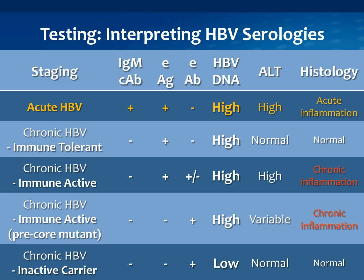Someone with chronic hep B who is immune tolerant has a positive E antigen and high viral load, but the body has not recognized the virus — there's no inflammation and ALT is normal. These people are still quite contagious due to high circulating virus. The immune active phase is very similar, but the ALT is high: the immune system has noticed the virus and is trying to eliminate it. On biopsy there's chronic inflammation, and in general these are folks we want to treat.